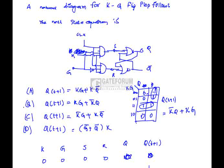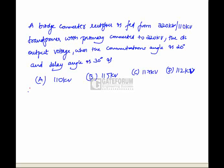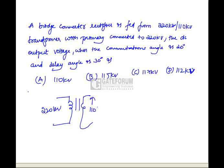Bridge converter rectifier is fed from 220 kilovolts by 110 kilovolts transformer with primary connected to 220 kilovolts. This is a transformer. Primary voltage is 220 kilovolts, whereas secondary voltage is 110 kilovolts. Bridge rectifier is connected to secondary of the transformer. This source voltage Vs equals 220 kilovolts.